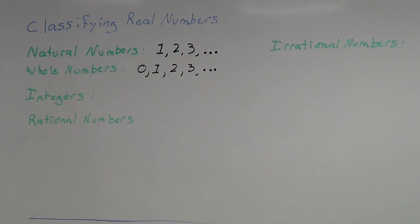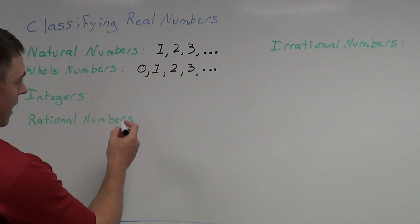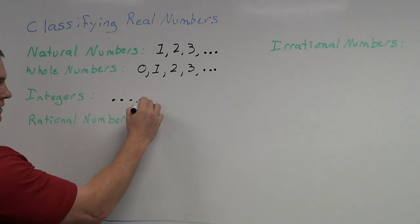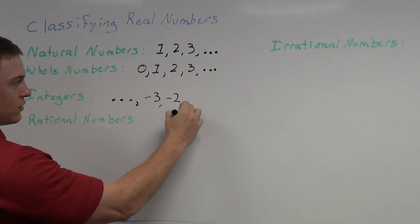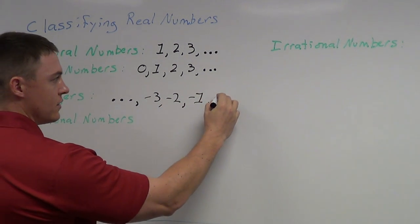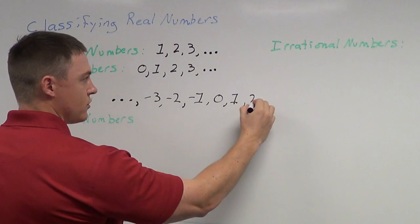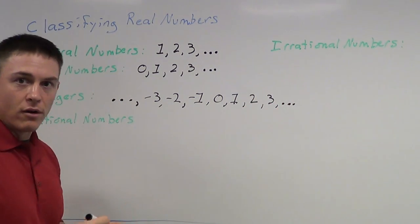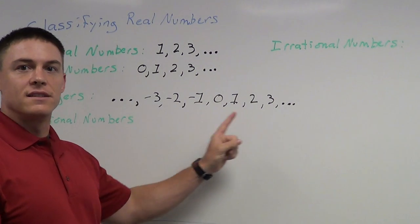Next we have the integers. One way you can think of the integers is the whole numbers plus all the negative numbers. So now we're starting to introduce negative numbers into our classification. For example, negative three, negative two, negative one, zero, one, two, three, so on and so forth. Now notice that I have dots at both ends of these.